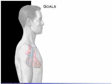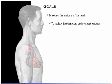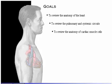Your goals for learning are to review the anatomy of the heart, to review the pulmonary and systemic circuits, and to review the anatomy of a cardiac muscle cell. To see definitions of terms, click the bold red words.